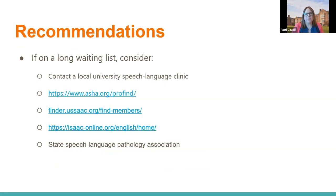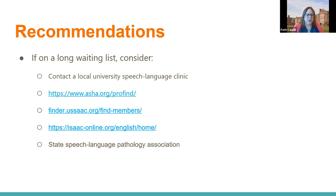If there's a long waiting list, look for other options. Consider a local university speech-language clinic — there's frequently an AAC specialist on staff. ASHA is the American Speech Language Hearing Association and has a ProFind website where you can find speech-language pathologists who have identified themselves as experts in AAC. You can also go to USSAAC and ISAAC — societies for AAC — and search nationally and internationally for specialists. If you're in the United States, look for your state speech-language pathology association, which also has a find-a-specialist function.